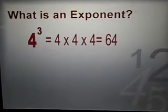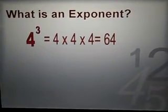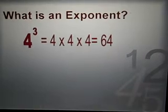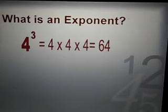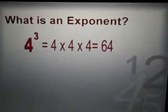Let's take a look at another example. 4 to the third power, or 4 to the power of 3, or simply 4 cubed equals 4 times 4 times 4, which equals 64.